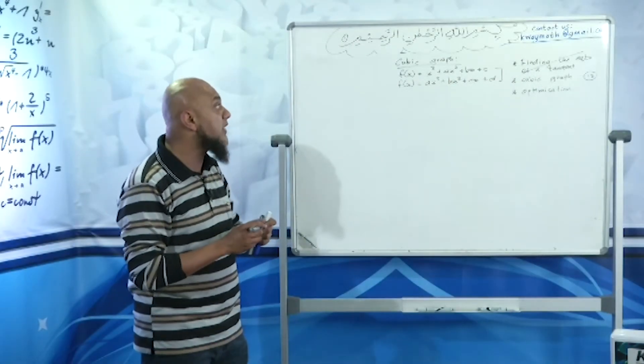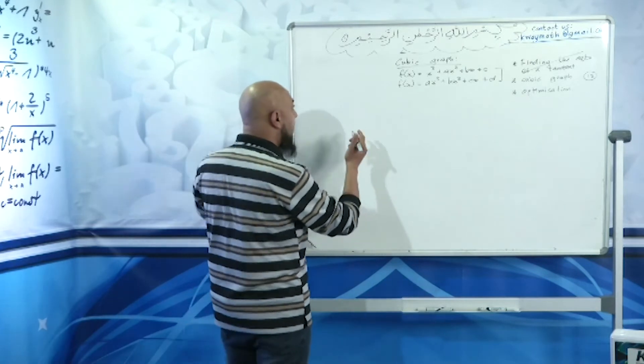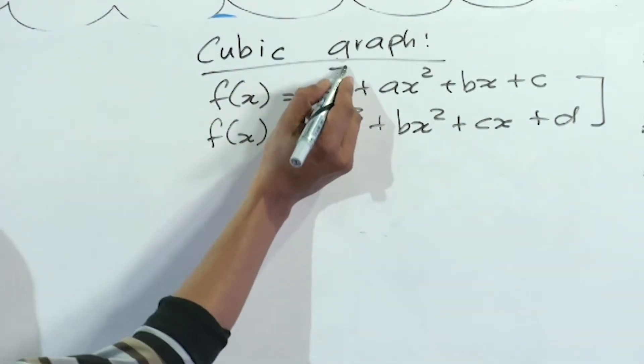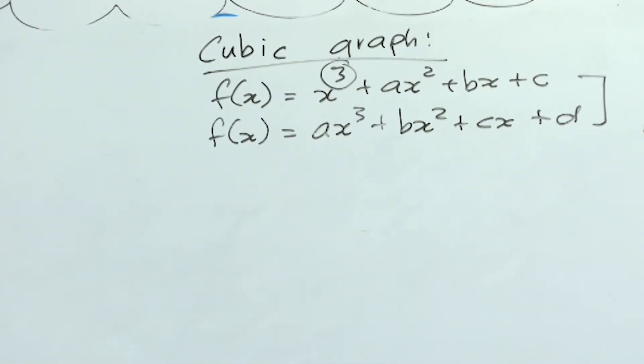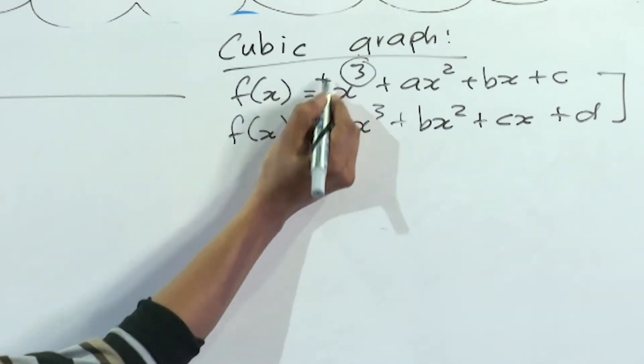Let me show you what the shapes of the graph would look like. Because it's cubic, it's got three x-intercepts, but not necessarily. Here are the three scenarios. If it's positive, the graph could look like that—one, two, three x-intercepts.